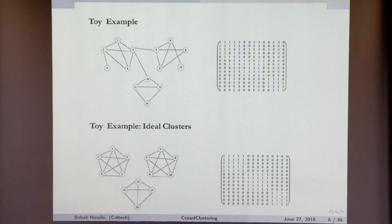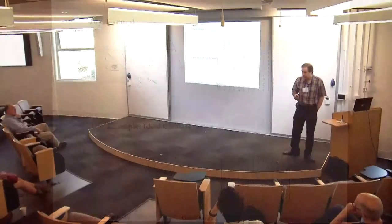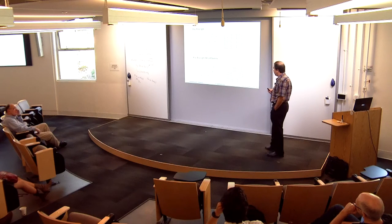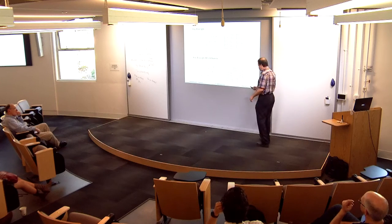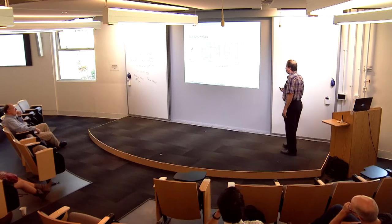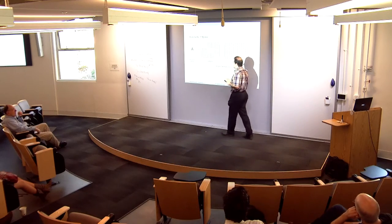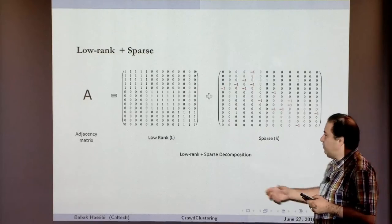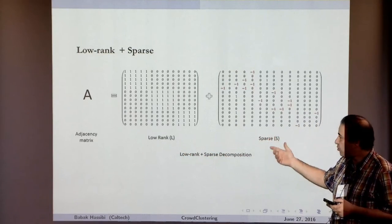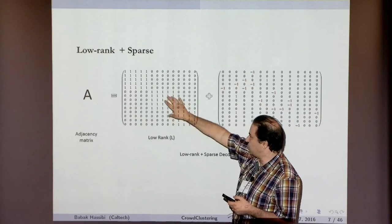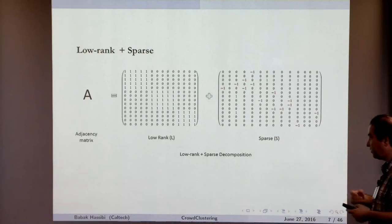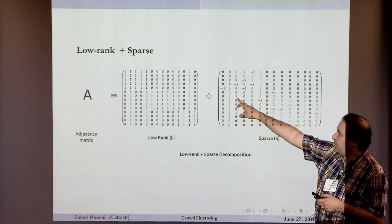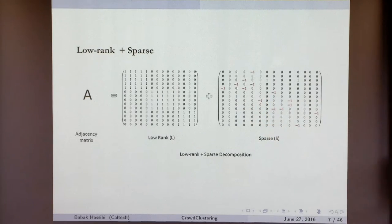The idea we'll use is to take the adjacency matrix of the graph and try to decompose it into a low-rank component L and a sparse component S. The low-rank component represents the clusters by placing a clique on top of all of them — connecting everything within a cluster. The leftover, which includes edges missing from cliques or edges connected between clusters, will end up in the sparse component. That's the idea.